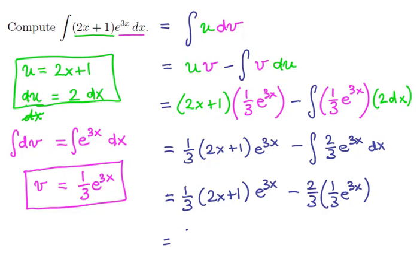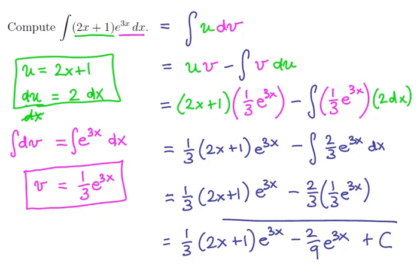Cleaning this up one more time, we get 1 third times 2x plus 1 times e to the 3x minus 2 ninths e to the 3x. There's one antiderivative, and here would be all of the antiderivatives. And this is a completely acceptable place to leave it.